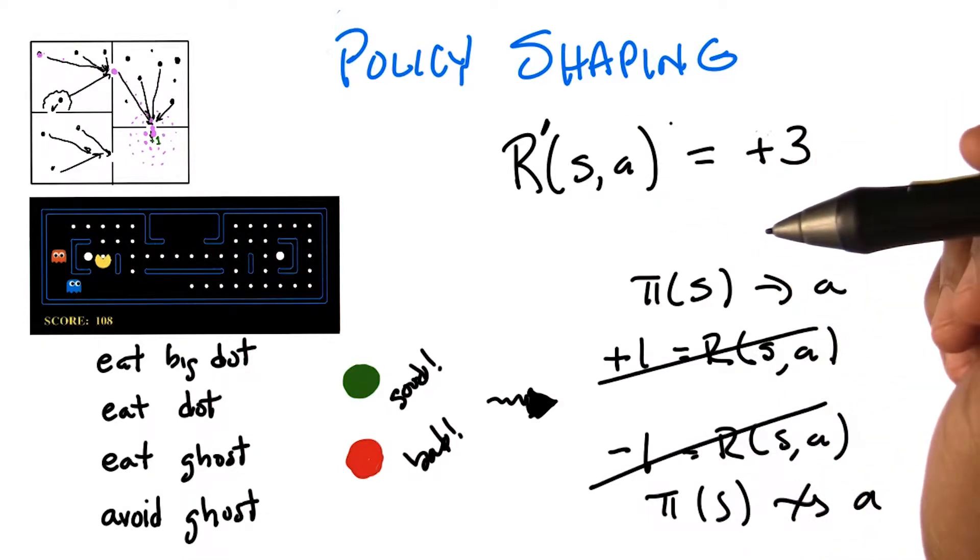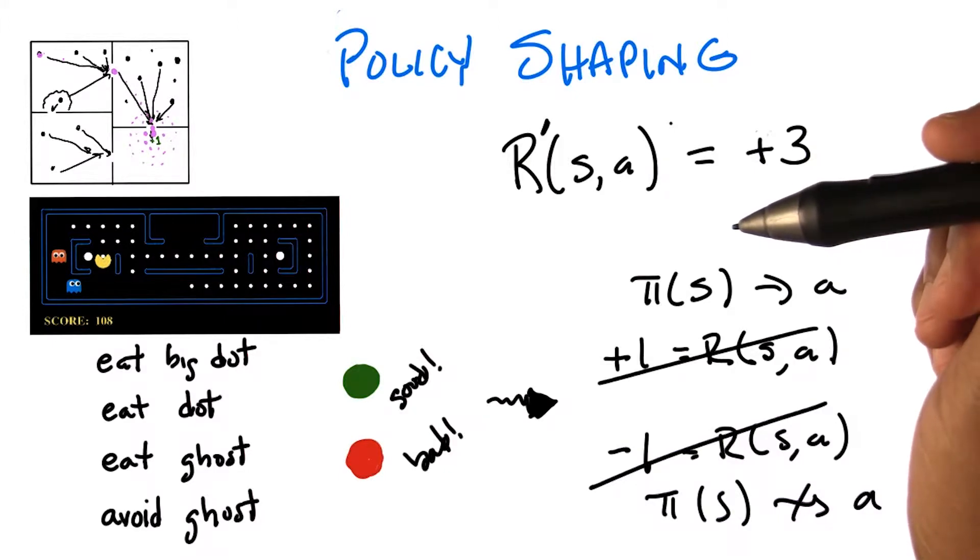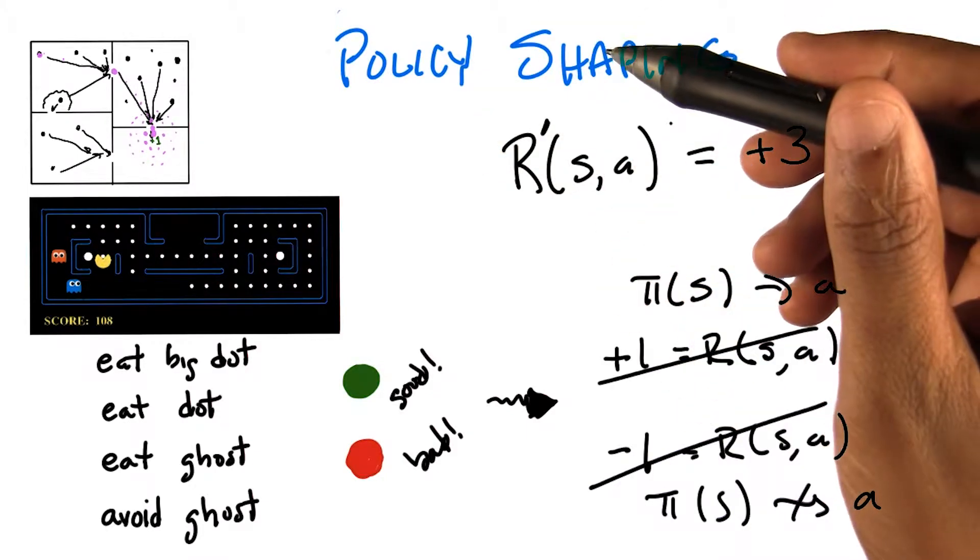Yeah, though in the case where we were doing potential-based shaping, we also had to make sure that whenever we sprinkled some positive reward in, there was negative reward someplace else to balance it out, so you didn't get new positive reward cycles happening.